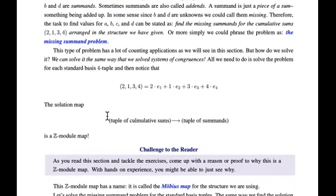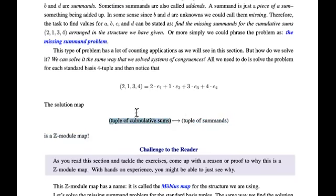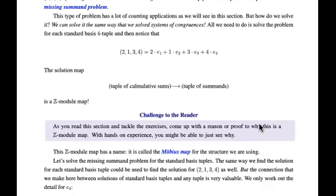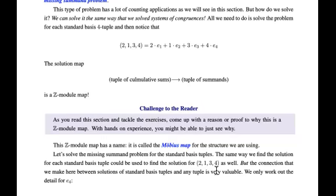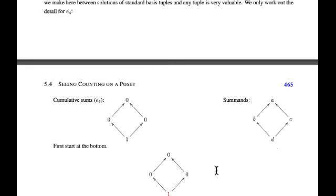So the solution map — going from the sums to the summands — is actually a Z-module map. Realizing that these tuples give us a free Z-module on each side, we can represent the solution map by a matrix. It's called the Möbius matrix for the particular structure of the poset, and the map given by that matrix is called the Möbius map.